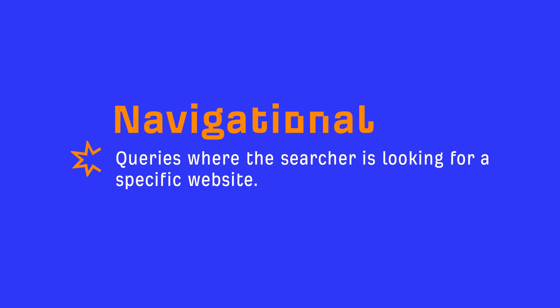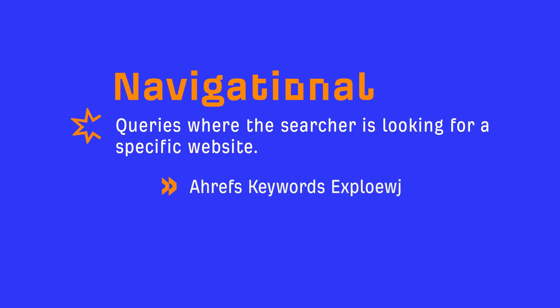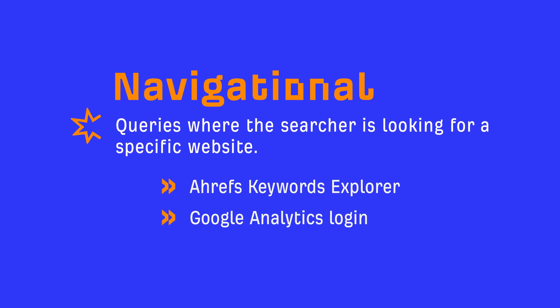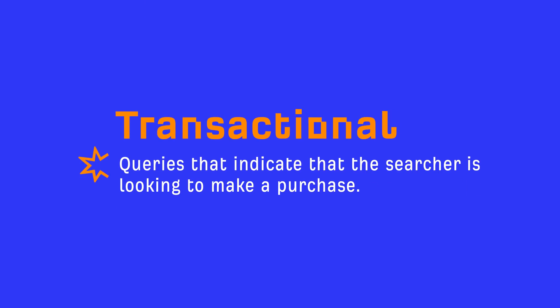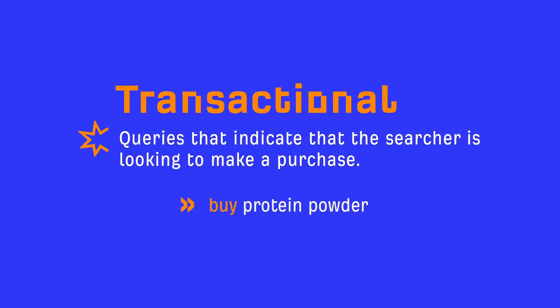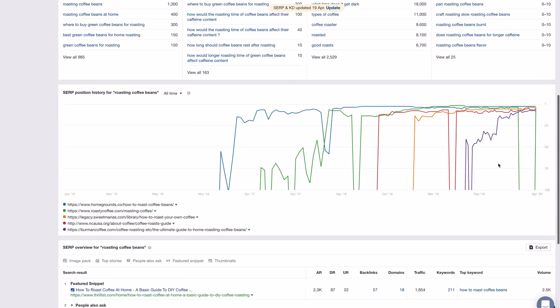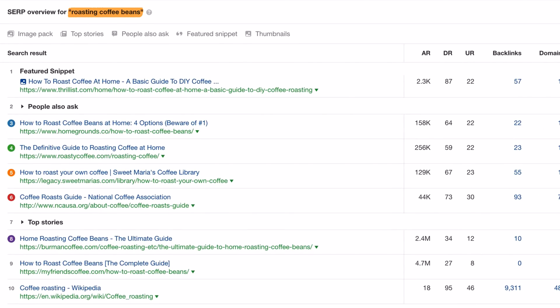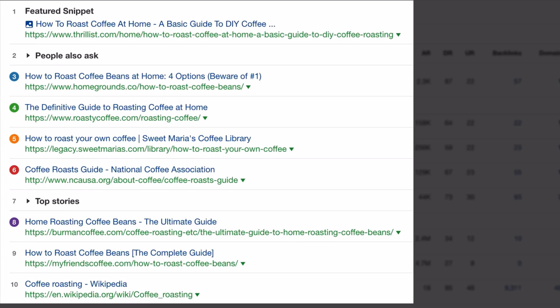Navigational queries are when the searcher is looking for a specific website — for example, Ahrefs' Keywords Explorer or Google Analytics login. Finally, transactional queries indicate that the searcher is looking to make a purchase, so 'buy protein powder' would fit in this group. Keyword modifiers like these won't always be in the query, so the way to identify search intent is to look at the SERP. For example, looking at the top 10 pages for the query 'roasting coffee beans,' you'll see that the top 10 pages are clearly informational.